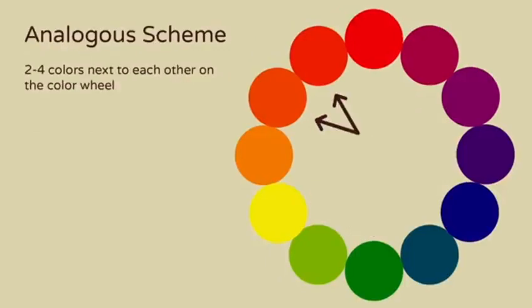An analogous color scheme is made up of two to four colors sitting next to each other on the color wheel. These are just a few examples of analogous color schemes.